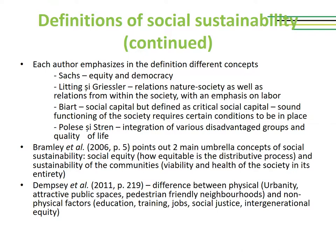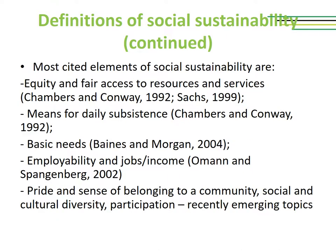There are authors who talk about two main umbrella concepts of social sustainability. These are social equity, meaning how equitable is the distributive process in a society, and sustainability of the communities, which means basically the viability and health of the society in its entirety. The most emphasized elements of social sustainability include equity and fair access to resources and services, means for daily subsistence, basic needs, jobs, income, pride and sense of belonging to a community, social and cultural diversity, perception, and participation. The last mentioned ones are recently emerging topics.